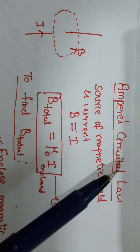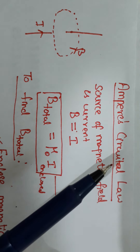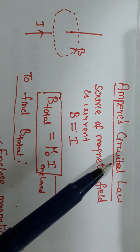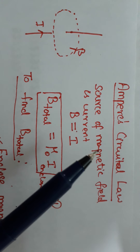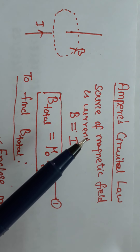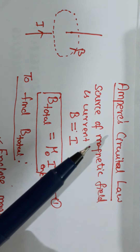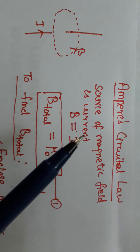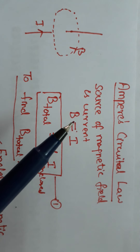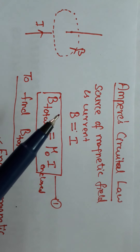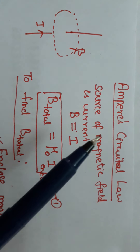Ampere's Circuital Law is easy to apply in complex situations, whereas Biot-Savart's Law is difficult. Using Ampere's Circuital Law, you can calculate how much magnetic field is produced by the current.